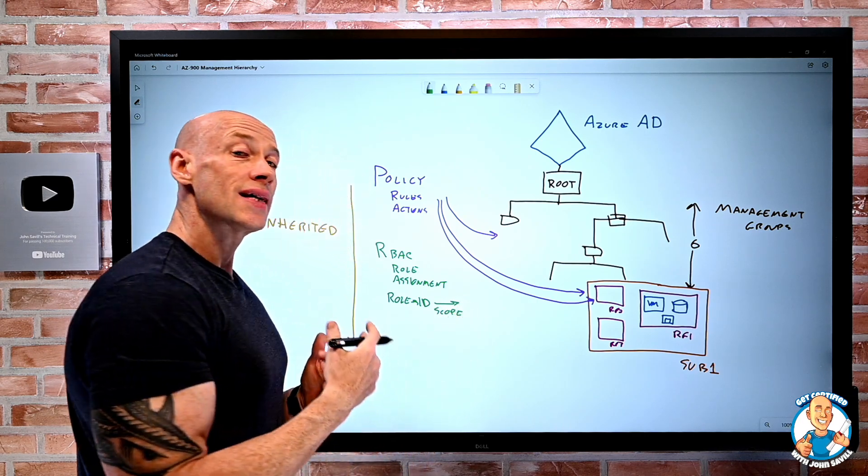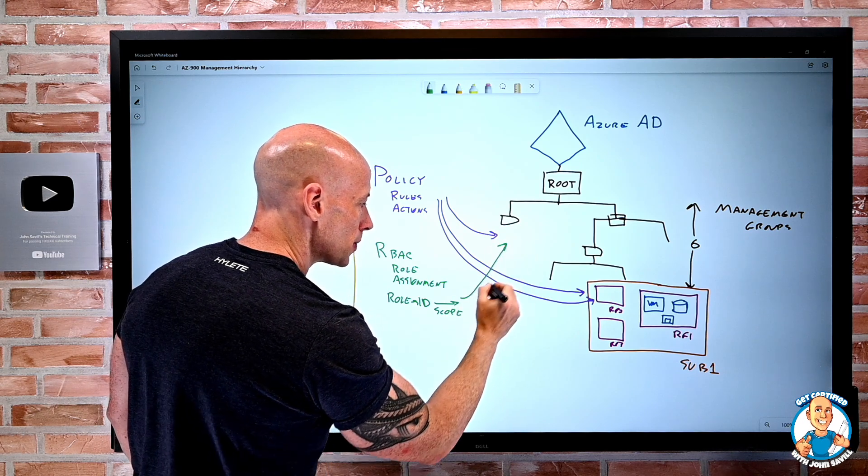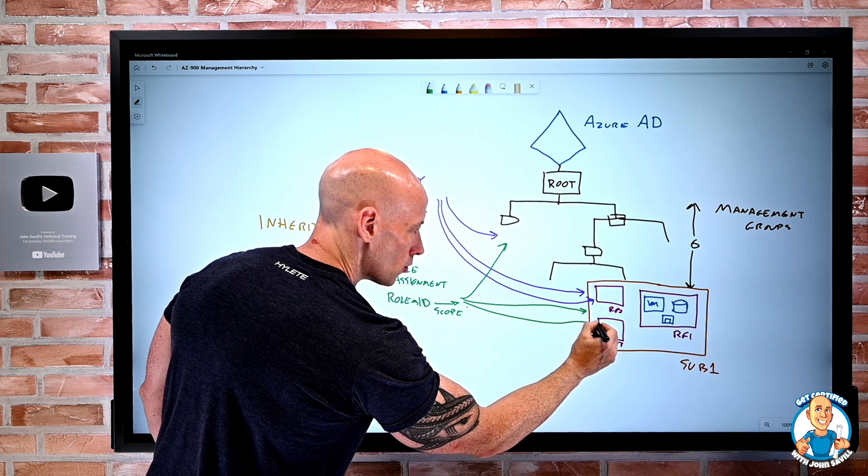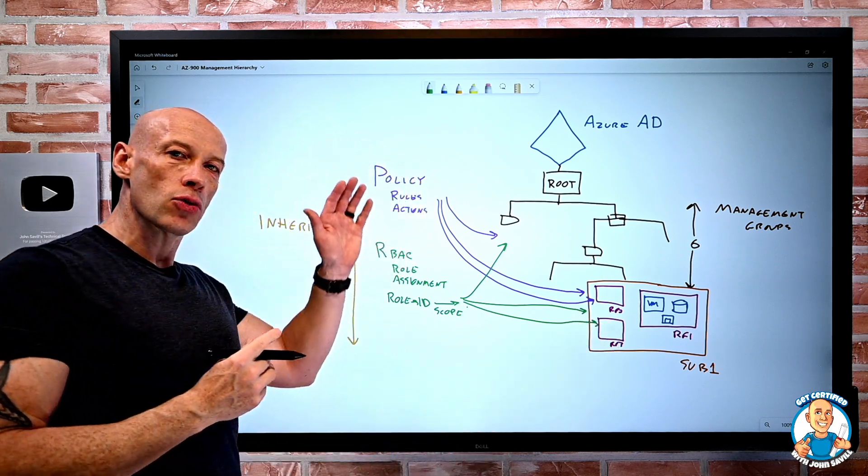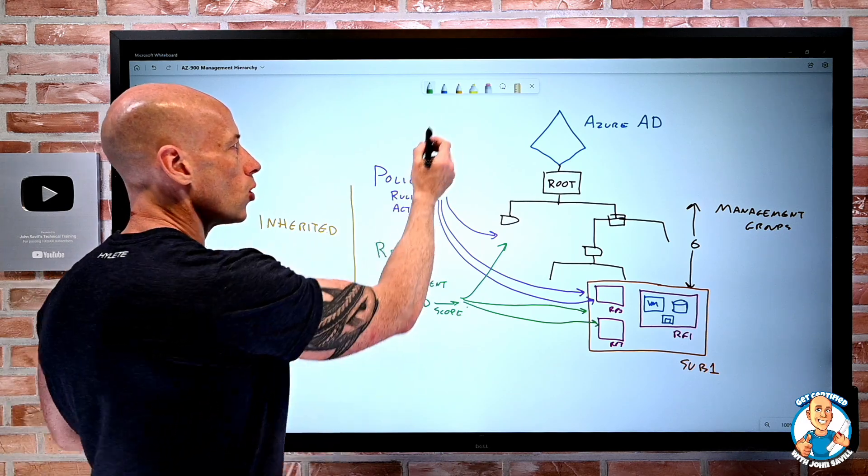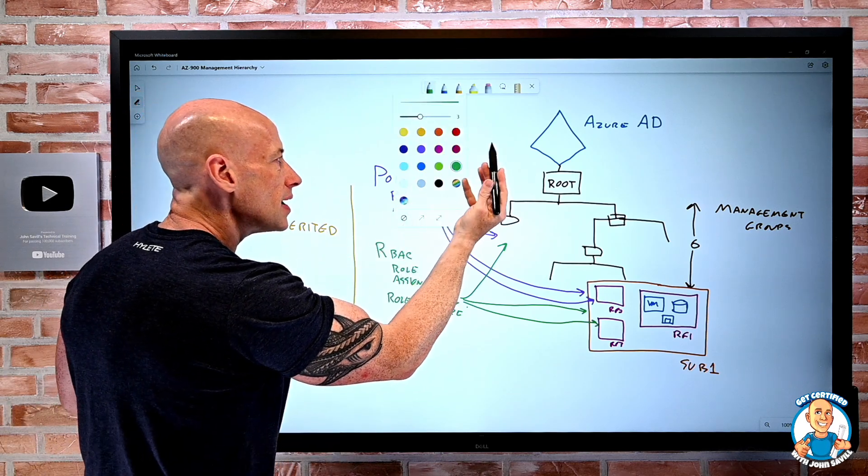And once again, that scope can be management groups, subscriptions, resource groups. So we have those same constructs available that I can use for role-based access control as well.